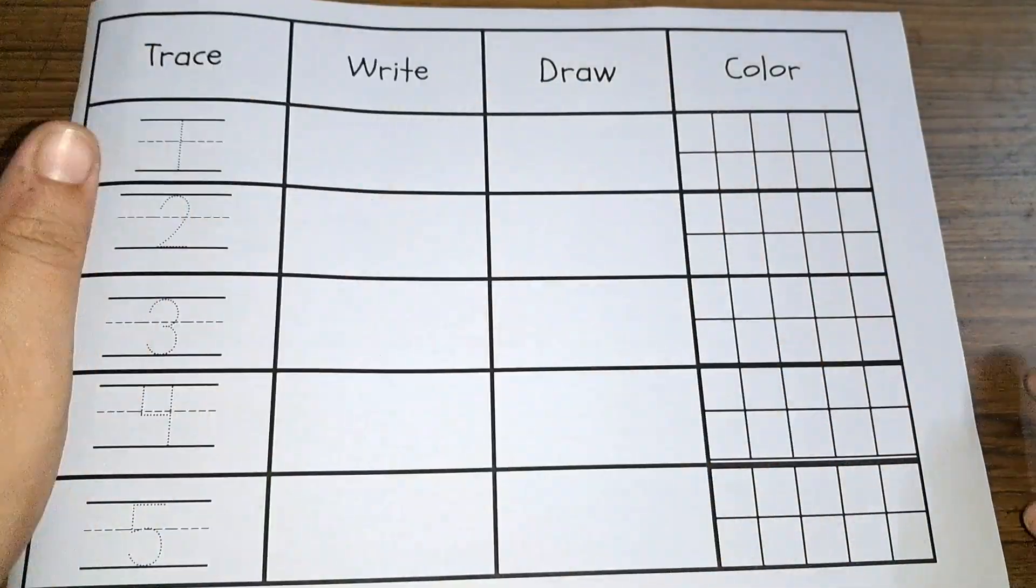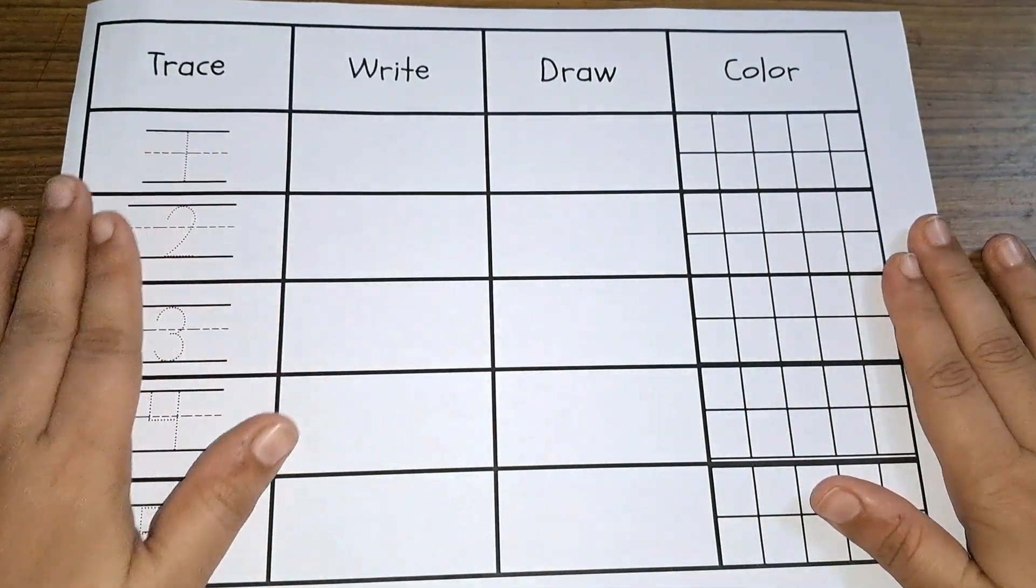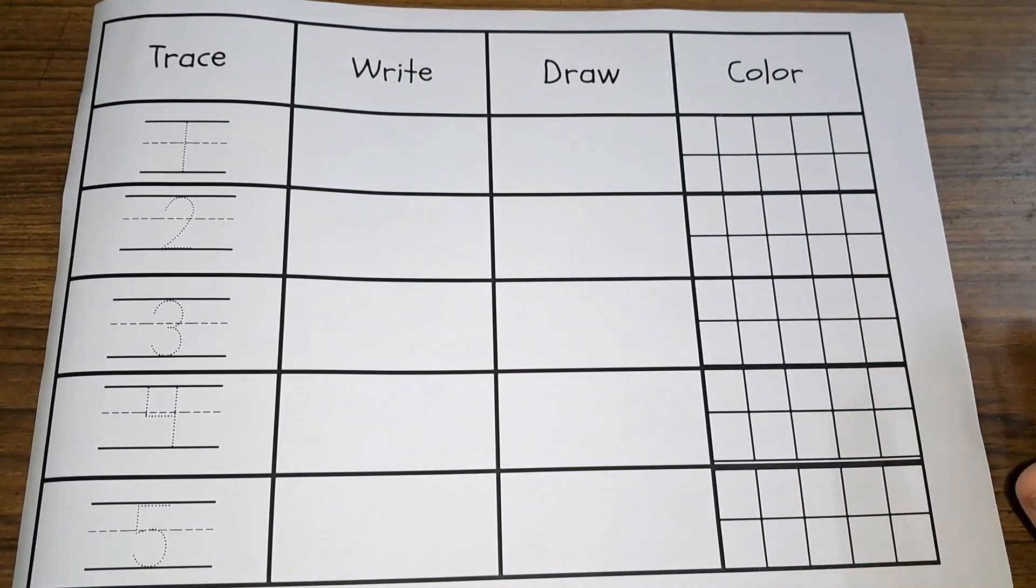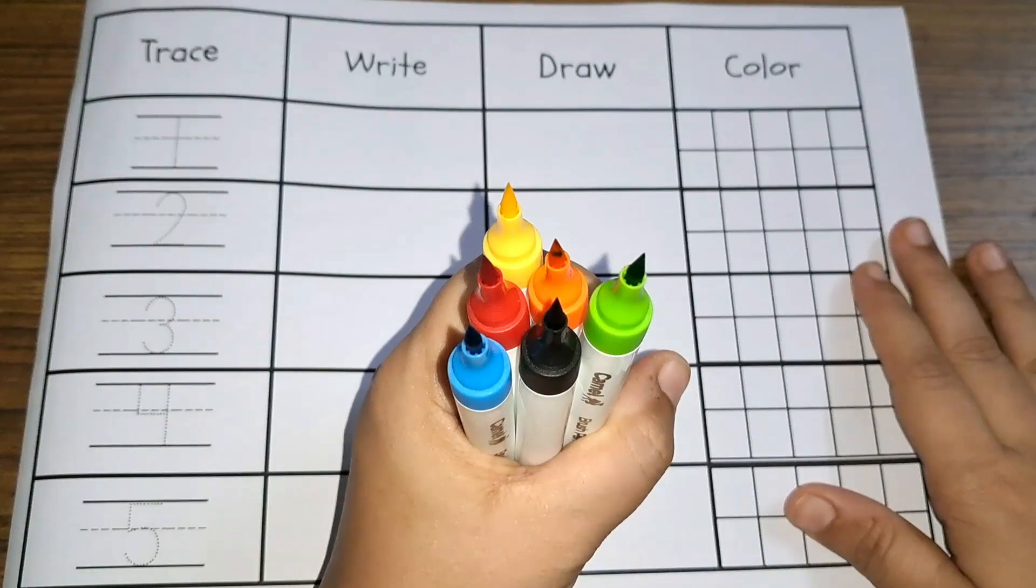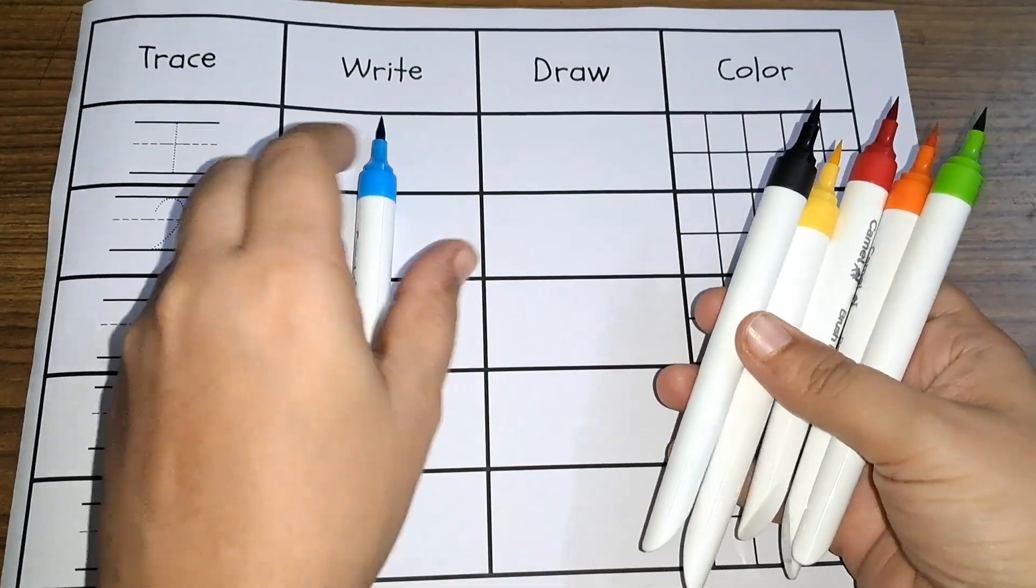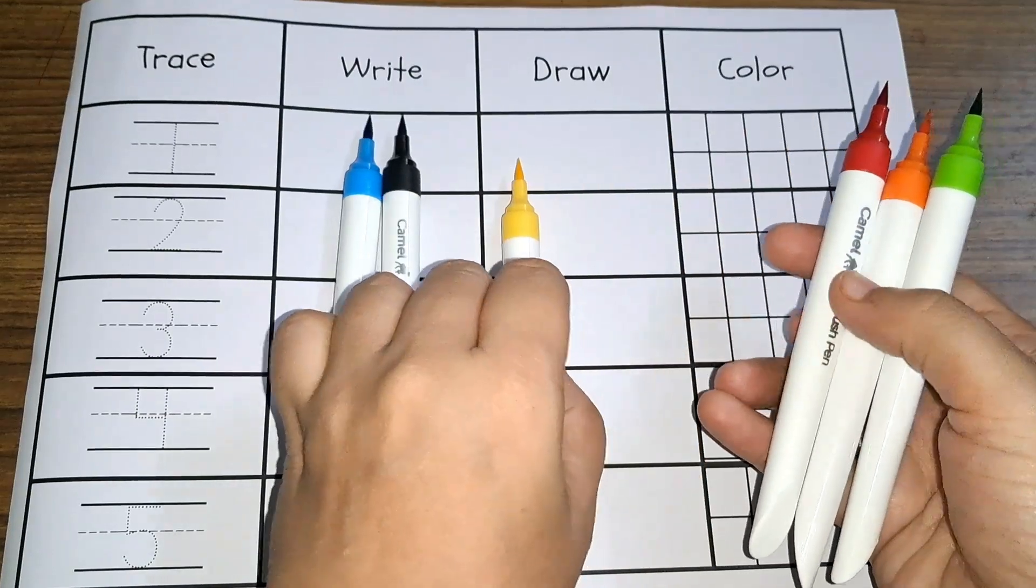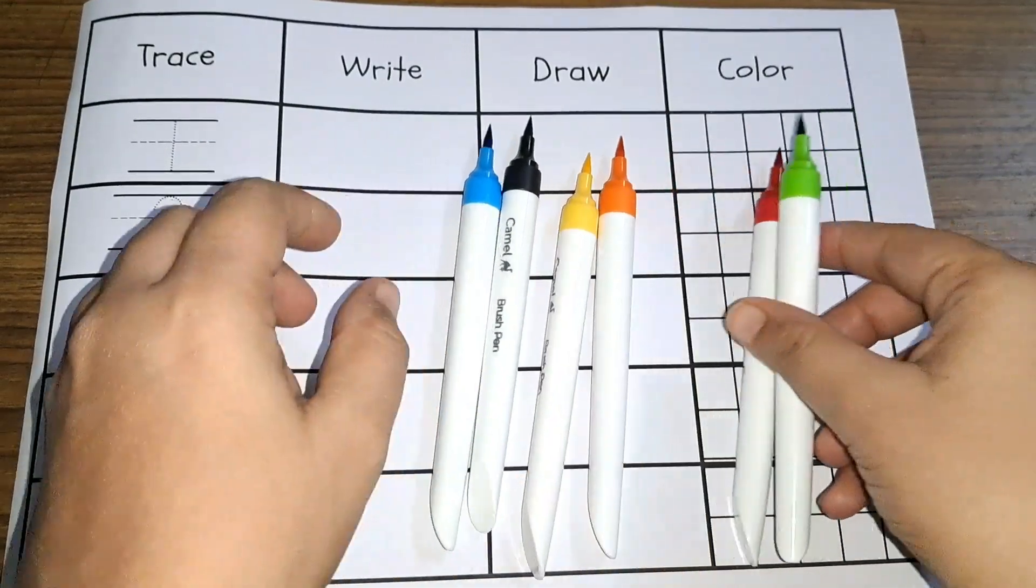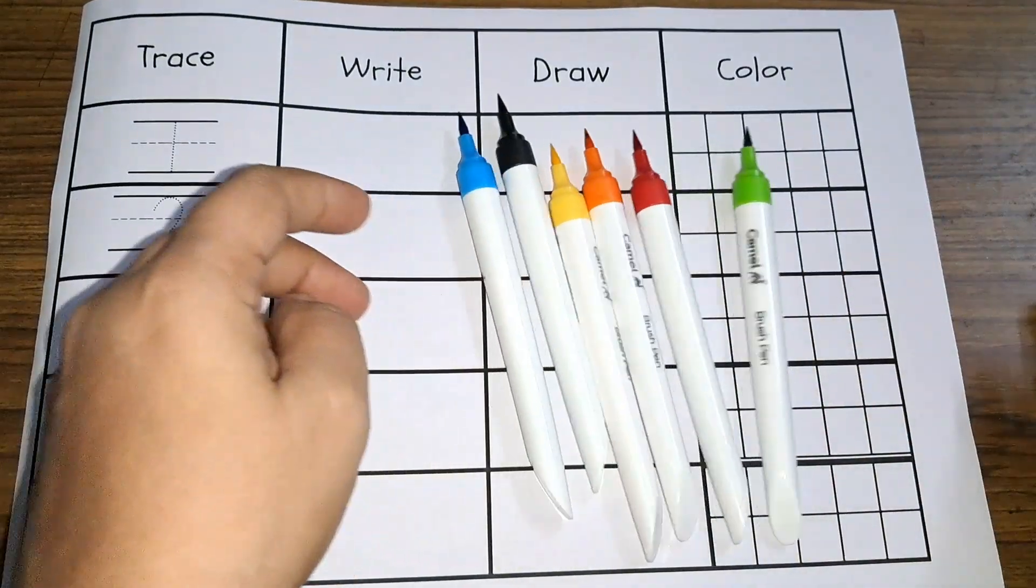Hey kids, let us learn numbers 1 to 5. But first, let us learn some colors. These are the colors we will use: blue color, black color, yellow color, red color, orange color, and green color.